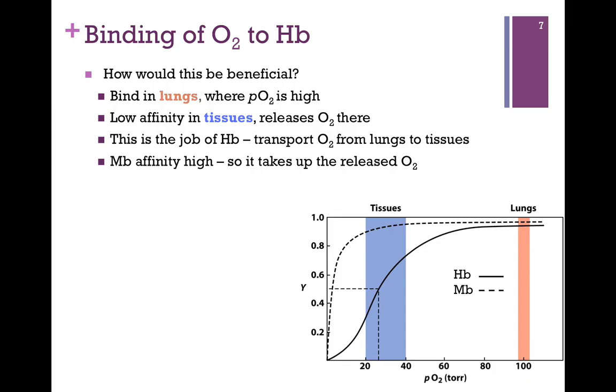And now myoglobin takes over. That's its job. It has a really high affinity at low concentration. And so it picks up that oxygen and delivers it to the mitochondria. So you can see the difference in their structure and function relate specifically to their biological roles in the transport of oxygen.